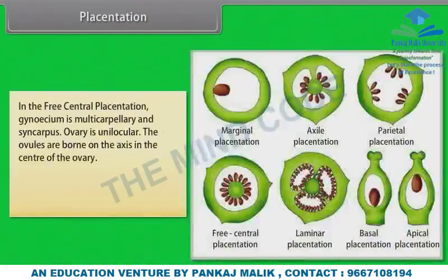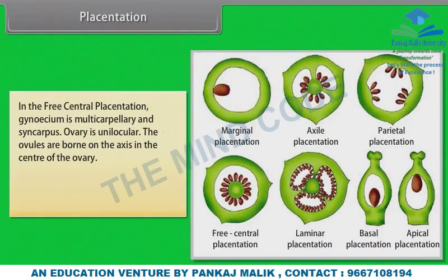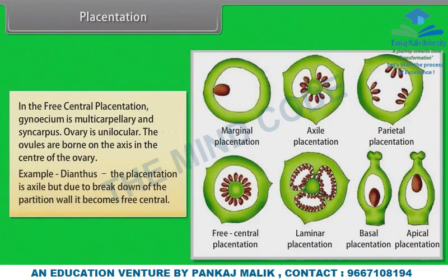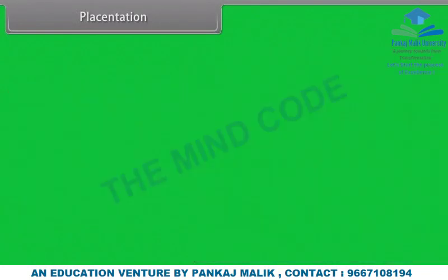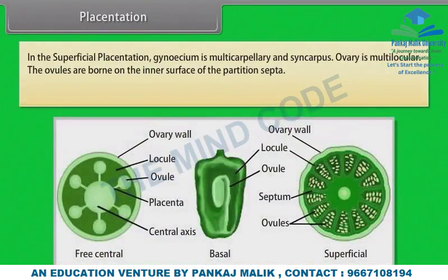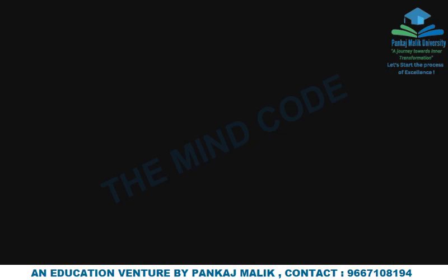Free central placentation — gynosium is multicarpellary and syncarpous, ovary is unilocular; ovules are born on the axis in the center of the ovary, example Dianthus. The placentation is axile but due to breakdown of the partition wall it becomes free central. Superficial placentation — gynosium is multicarpellary and syncarpous, ovary is multilocular; ovules are born on the inner surface of the partition wall, example Nymphaea.